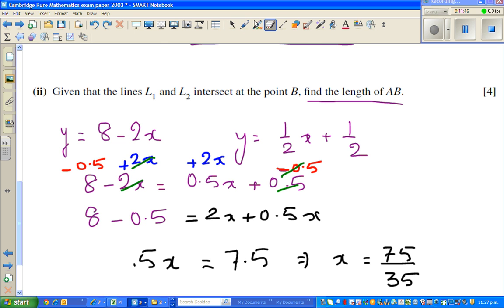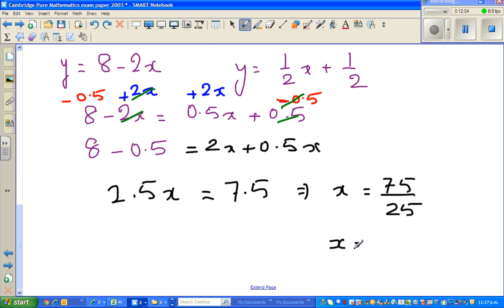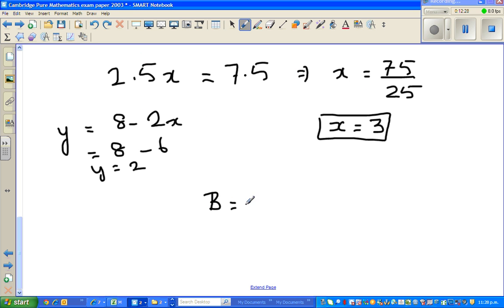This should be 2.5x. I generally have the intuition you should have a neat number, so x equals 3. Now I can find y using the easier equation, 8 minus 2x, which is 8 minus 6, so y equals 2. Point B has the coordinate 3 comma 2. I'll do the last part in the next video. Thank you very much.